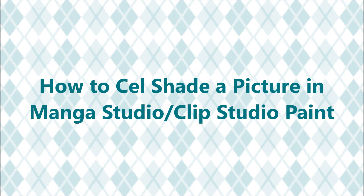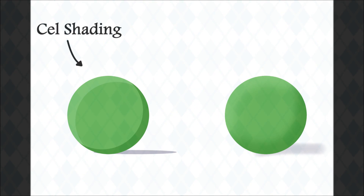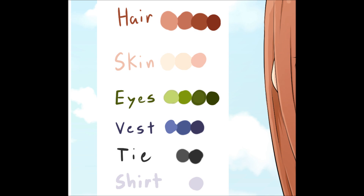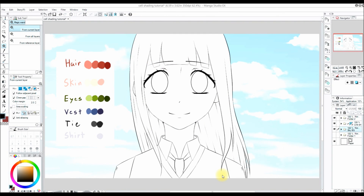Hello everyone! In this video I'm going to show how I cel-shade a picture in Manga Studio slash Clip Studio Paint. If you don't know what cel-shading is, it's basically just shading a picture with blocks of color instead of soft gradients. Cel-shading can be a nice technique for beginners since it's not too complicated. Also, my screen recorder alters the colors for some reason, so here's what my colors actually look like. So let's get started!